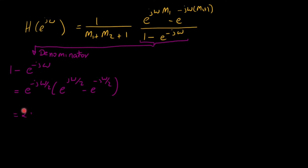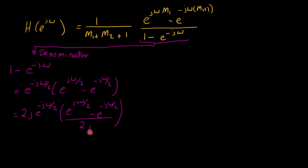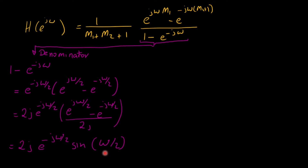We then multiply and divide by 2j, which allows us to recognize the definition of the sine function via Euler's identity. Thus the denominator becomes 2j · e^{−jω/2} · sin(ω/2).